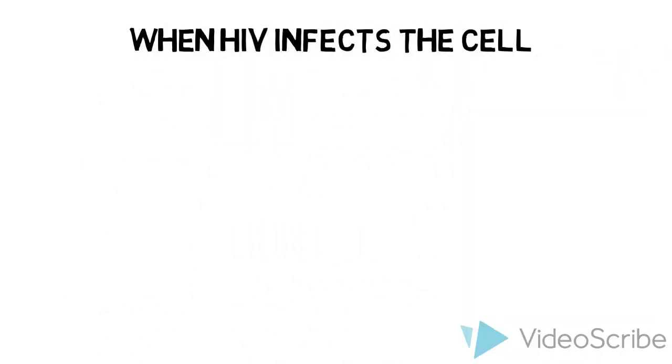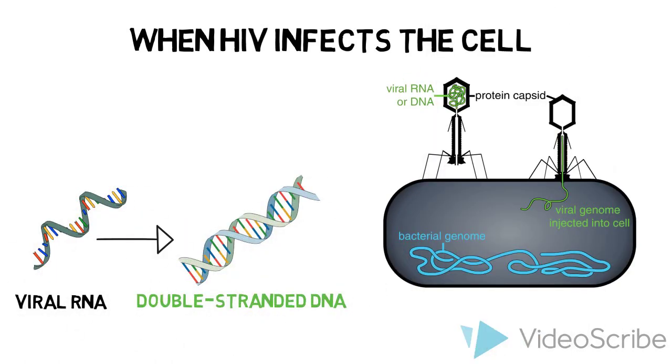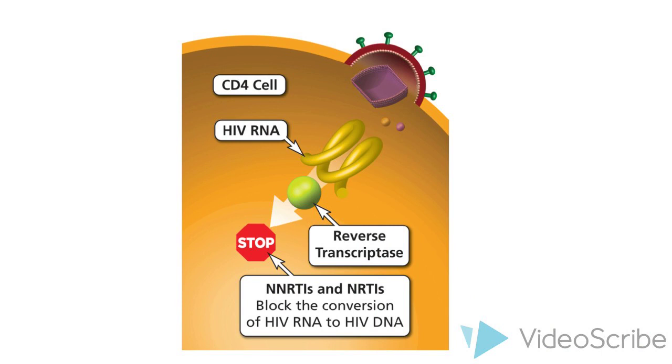When HIV infects the cell, reverse transcriptase works by copying the viral single-stranded RNA into double-stranded DNA. This DNA will invade the host genome and use the cell's machinery to make copies of itself. Truvada works by interfering with reverse transcriptase's ability to synthesize the double-stranded DNA, thus stopping the virus from replicating and preventing infection.